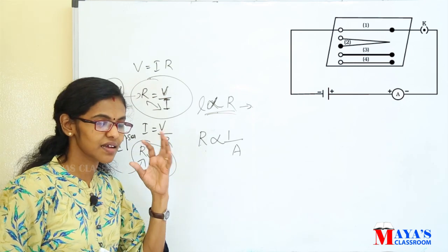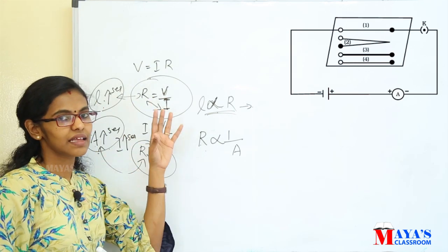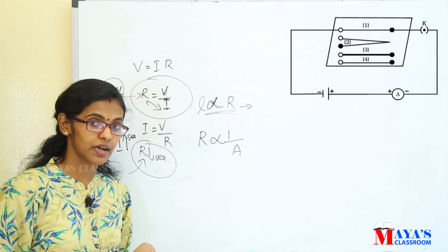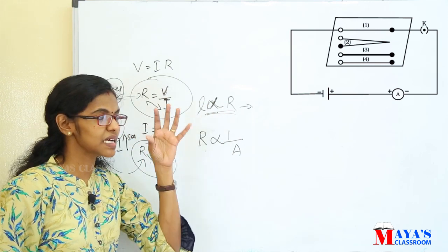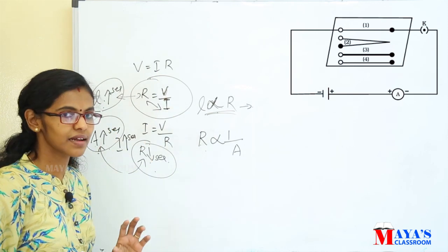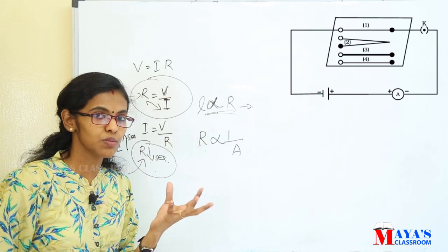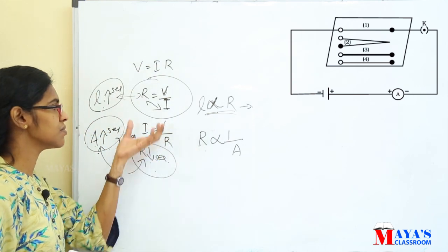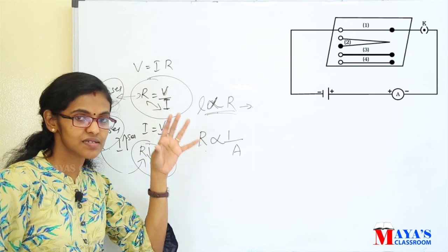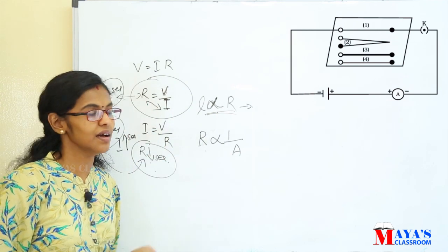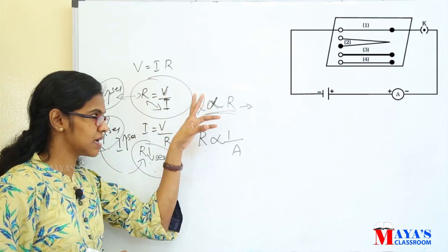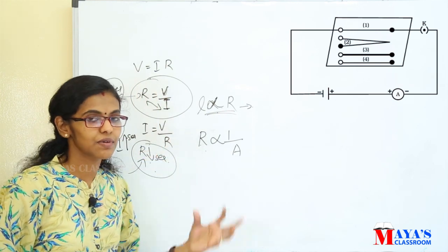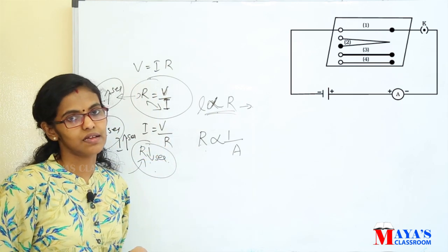There is a relationship between the length and resistance of a conductor, and the area of cross-section and resistance of a conductor. Also, there is the material. In the fourth case, there is a different material, which gives a different value of current and therefore different resistance. So resistance depends on three factors: first factor is length, then area of cross-section, and the third factor is the nature of the material.